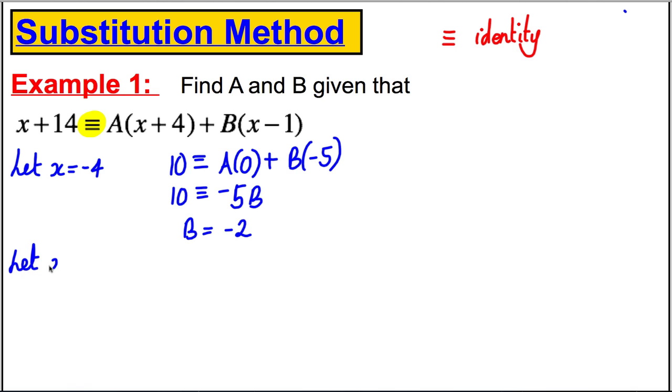And alternatively, we could let x = 1. If we did that, the right hand side, I would have 15 and it would be identical to A multiplied by 5 and B multiplied by 0 because 1 subtract 1, 0. So I would have 15 is identical to 5A. So therefore, I could determine that A is equal to 3 divided by 5.